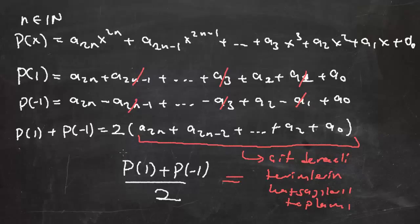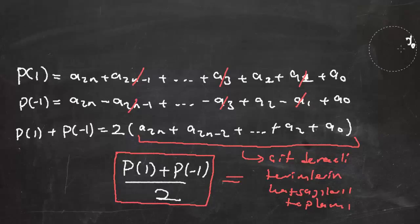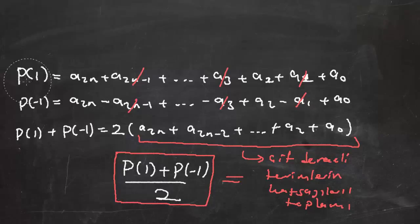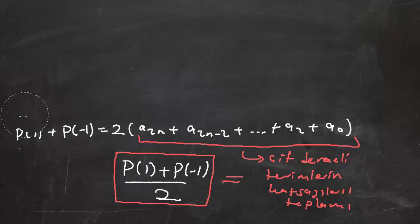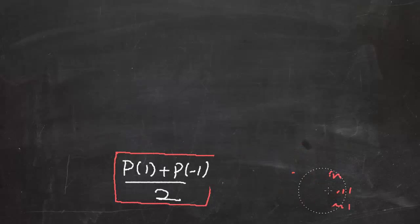Çıkarımımıza göre [P(1) + P(-1)]/2 olacak. Çift dereceli terimlerinin katsayılarının toplamını bulmak istiyorsak bir polinomda x yerine 1, x yerine -1 verip toplayıp 2'ye böleceğiz. Şimdi tek dereceli terimlerin katsayıları toplamını bulmaya çalışalım. Bu durumda yapmamız gereken tüm katsayılar toplamından neyi çıkarmak? Çift dereceli olanların toplamını çıkarmak.